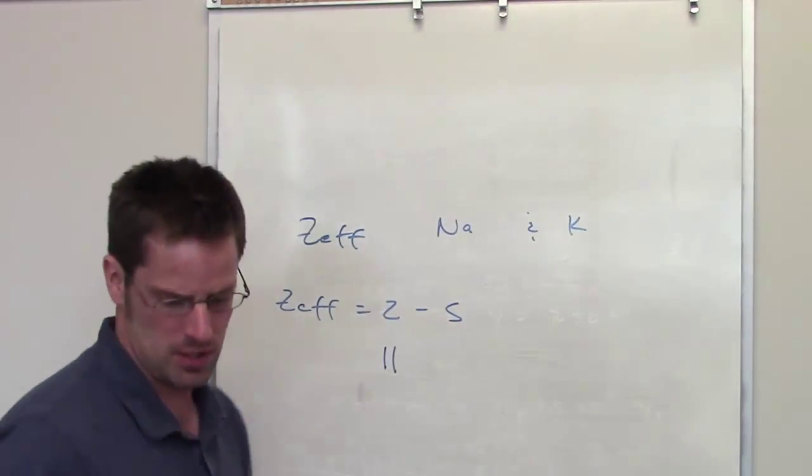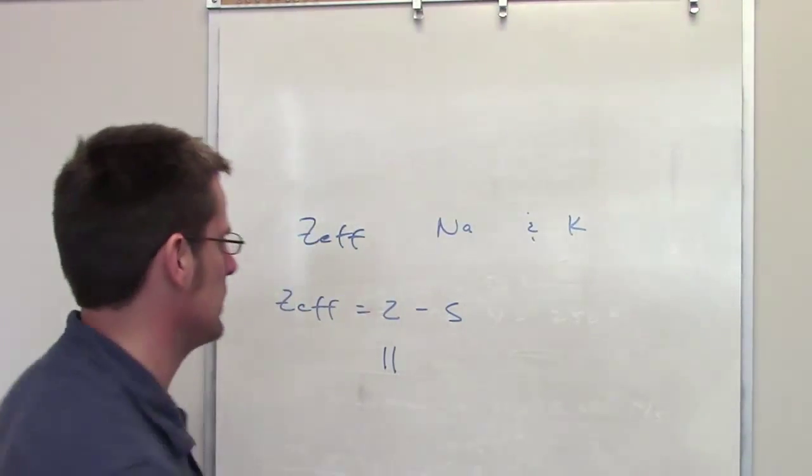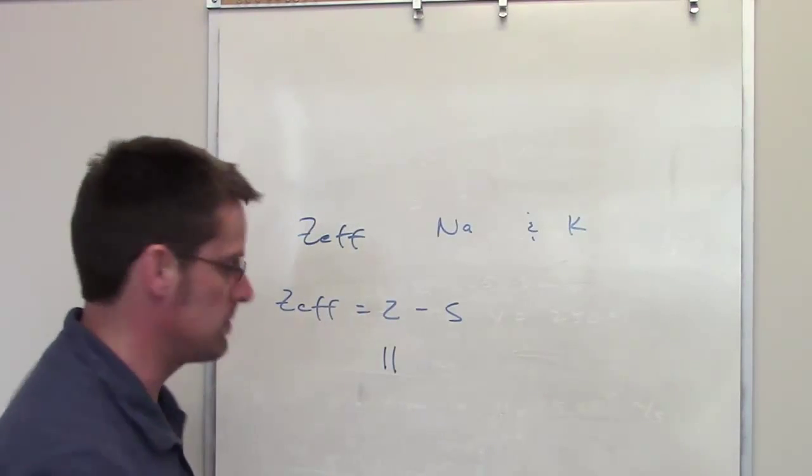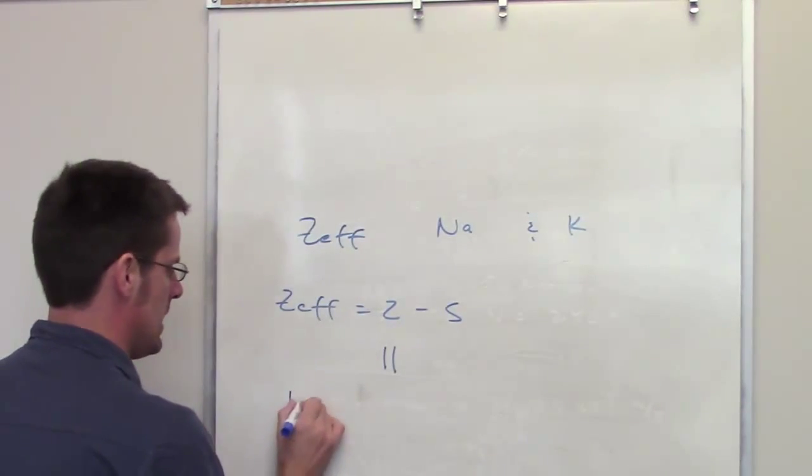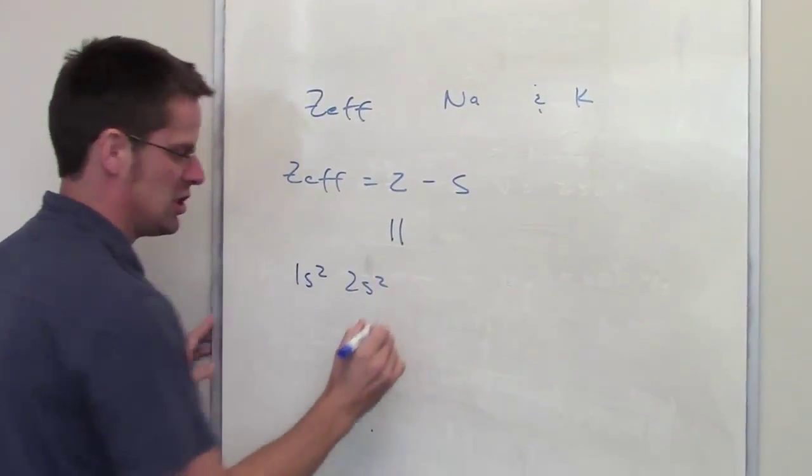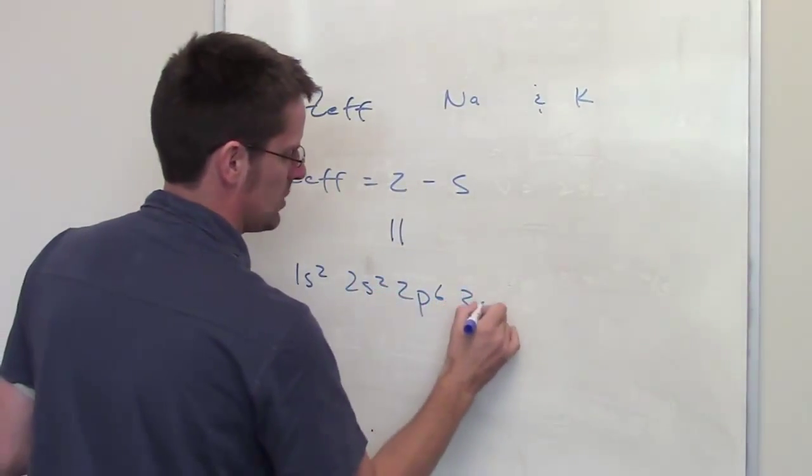Now, screening constant. The question is asking us the outermost electron, so we have to first write down sodium's electron configuration. It happens to be 1s2, 2s2, 2p6, 3s1.